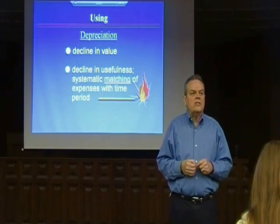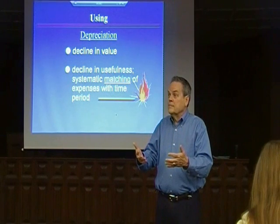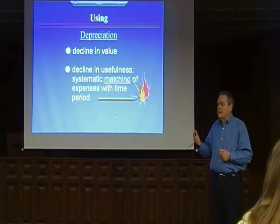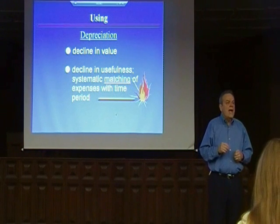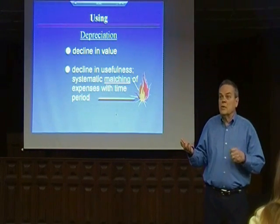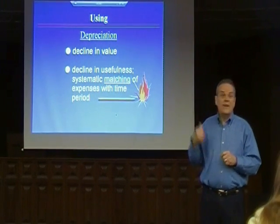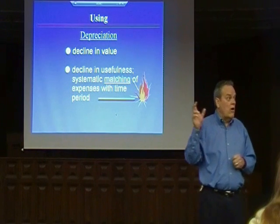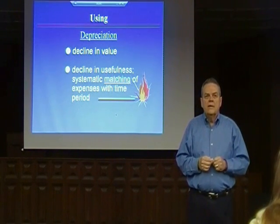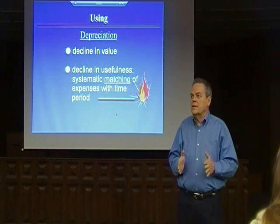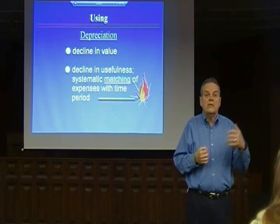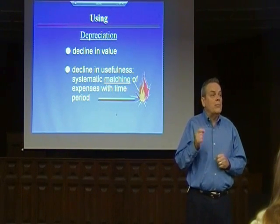You were introduced to depreciation back in chapters three and four when we started making adjusting entries. This is the chapter where we need to understand it better — why we're doing it, what we're trying to accomplish, and how to do it. Depreciation is the attempt to match expenses with revenue in a particular time period. Not only have you heard 'cost' a lot, you've heard 'matching' a lot. Matching is the one word we use to describe what we're trying to accomplish on an income statement — to get all the expenses offset against all the revenue in the same time period.